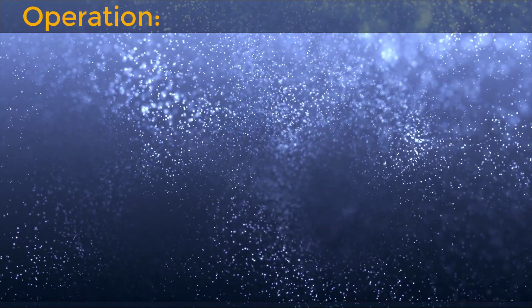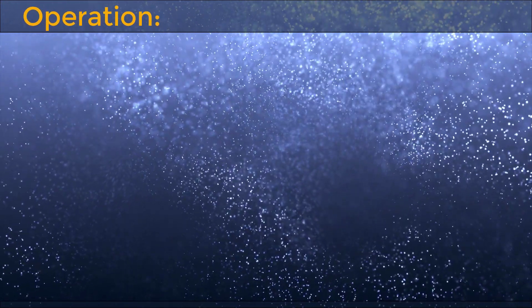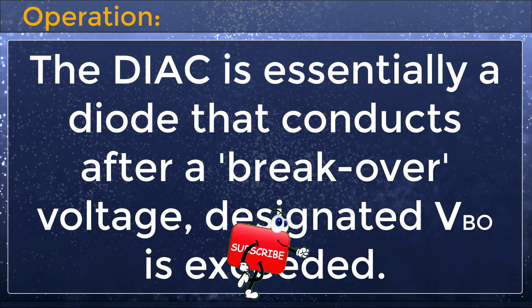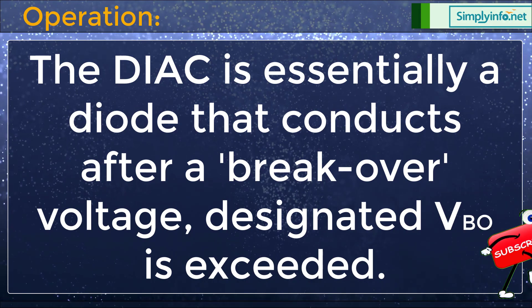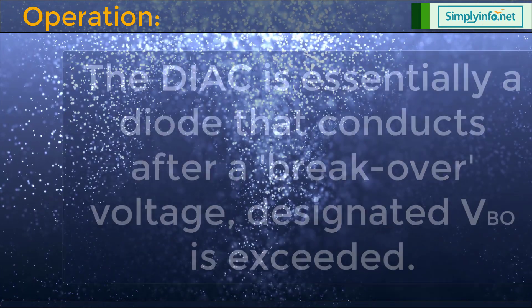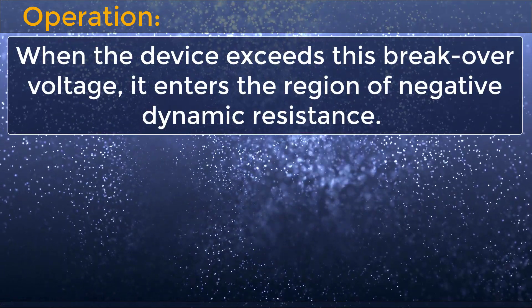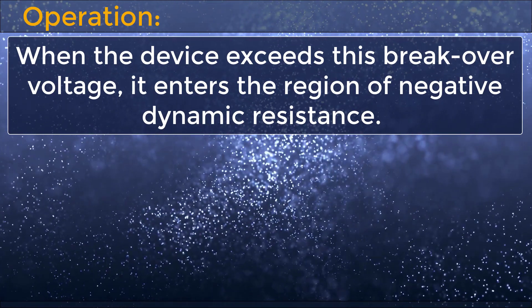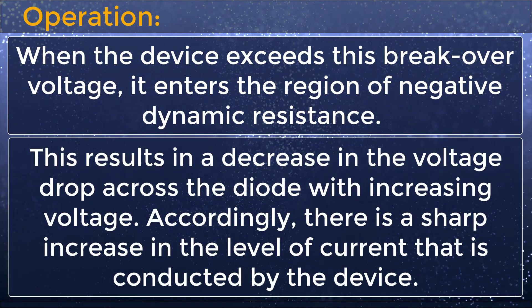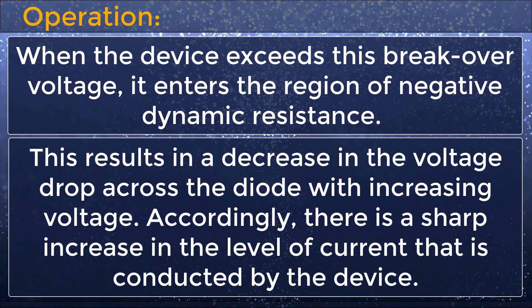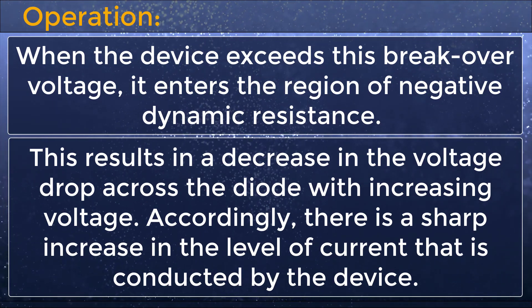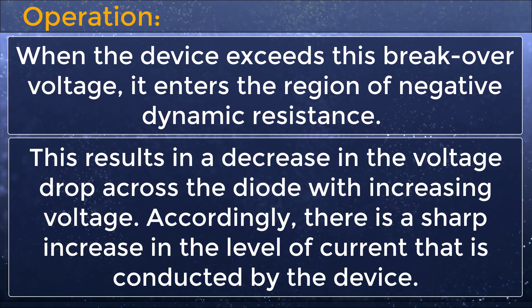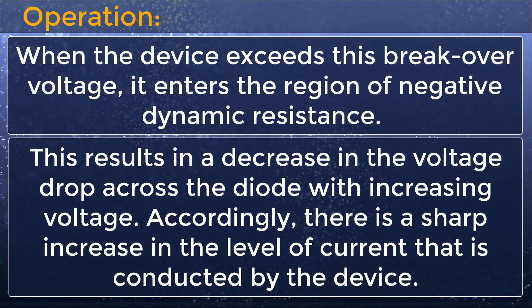Now let's look into the operation. The DIAC is essentially a diode that conducts after a breakover voltage, designated VBO, is exceeded. When the device exceeds the breakover voltage, it enters the region of negative dynamic resistance. This results in an increase in the voltage drop across the diode with increasing voltage, and accordingly there is a sharp increase in the level of current conducted by the device.